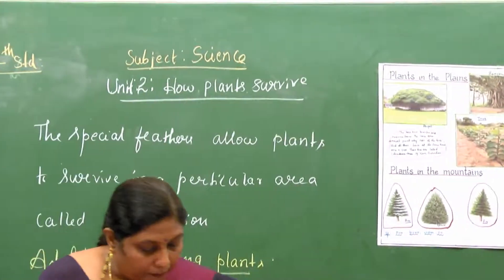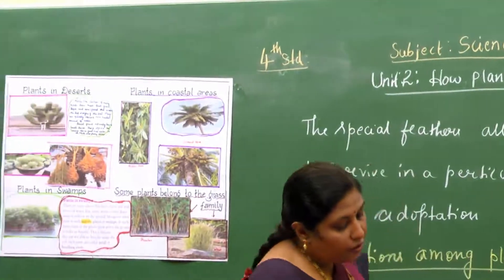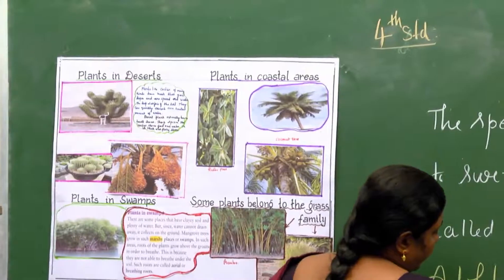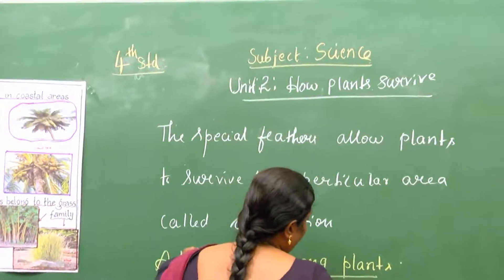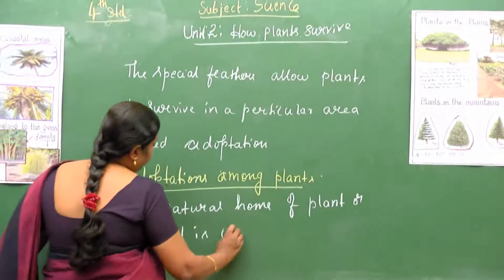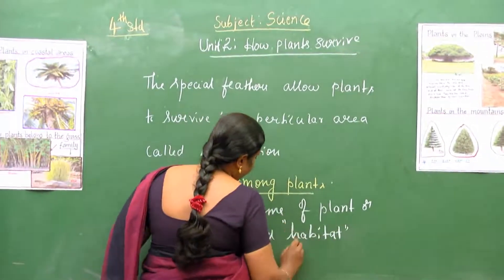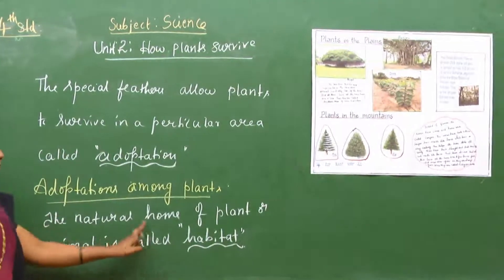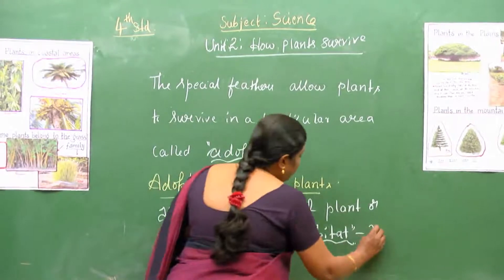Not all plants can survive in any particular environment. The natural home of a plant or animal is called its habitat. Habitat means living place.